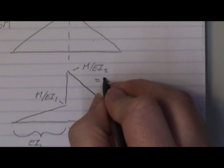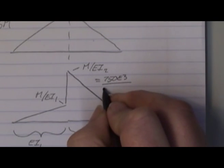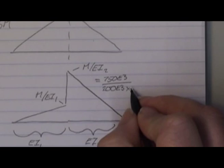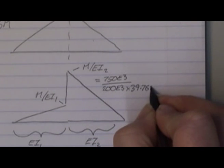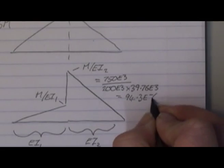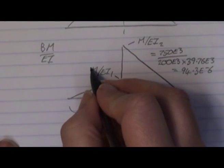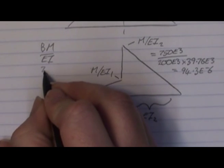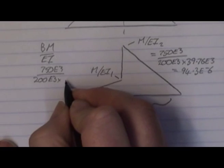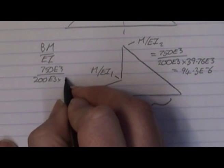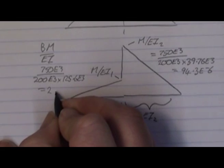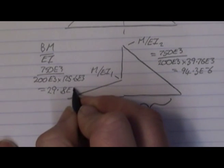So M over EI on the right side will be 750E3 divided by 200 × 10³ times 39.76E3, which gives 94.3 × 10⁻⁶. The left side, same process: 750 × 10³ divided by 200 × 10³ times 125.6E3, which gives 29.8 × 10⁻⁶.